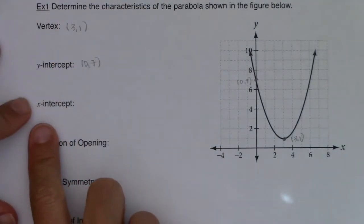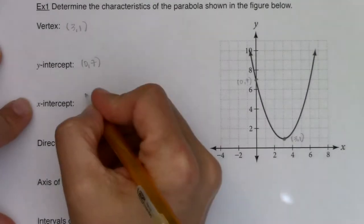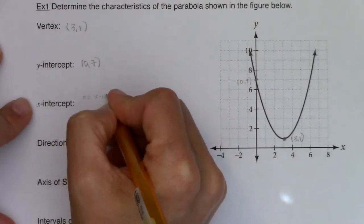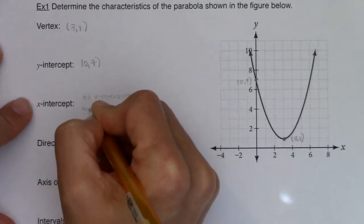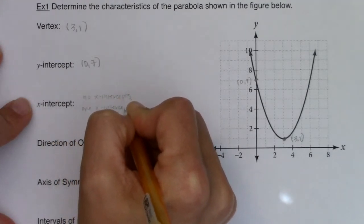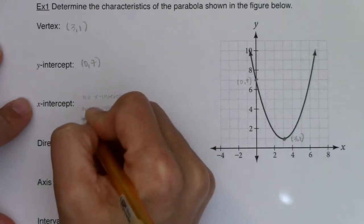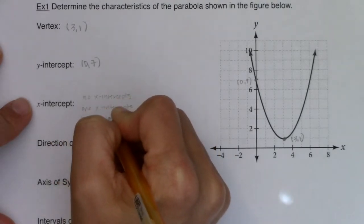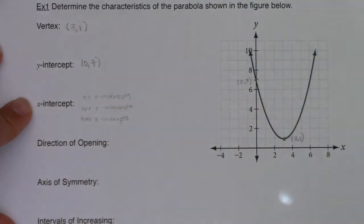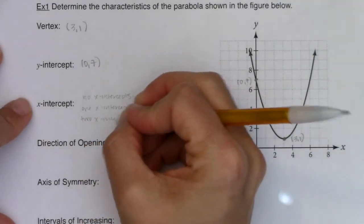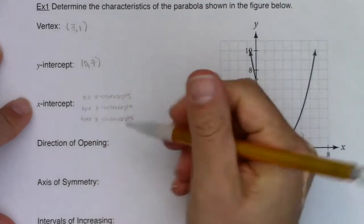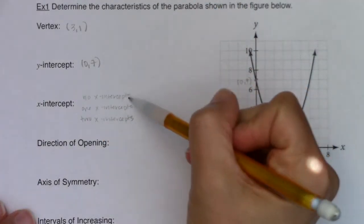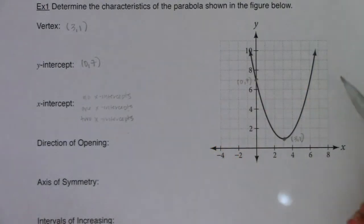Now when it comes to x-intercepts, when you have parabolas, there are three options. You will either have no x-intercepts, you may have one x-intercept, or you could possibly even have two x-intercepts. So these are your three options. You'll either write the word none, you'll give me one ordered pair, or you'll give me two ordered pairs.